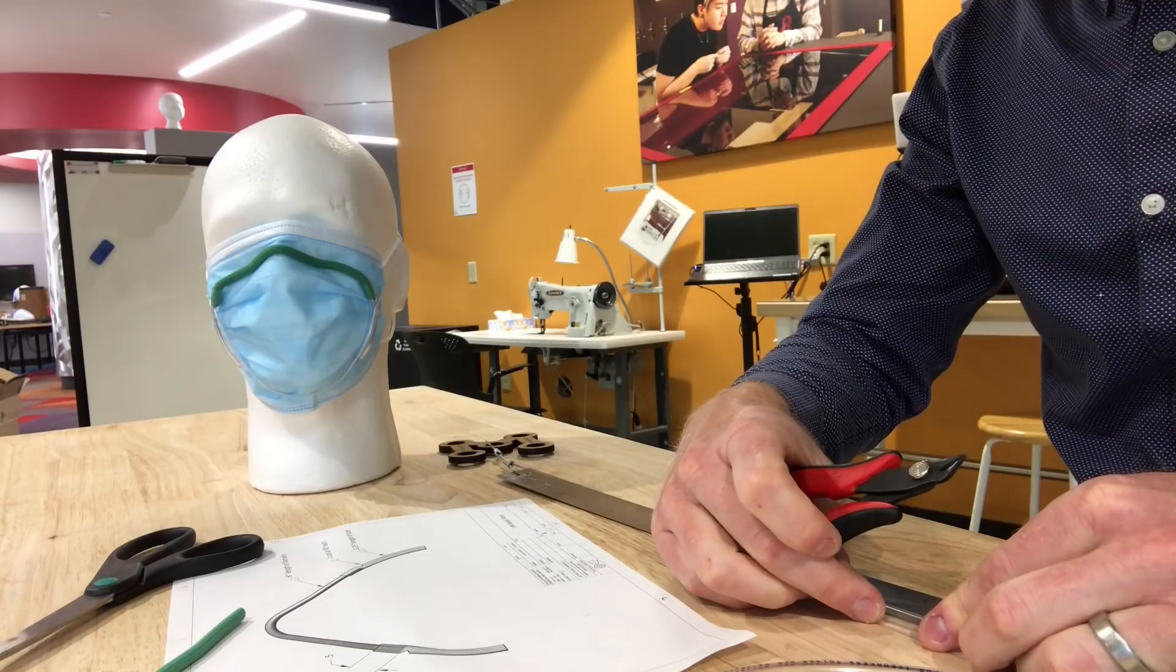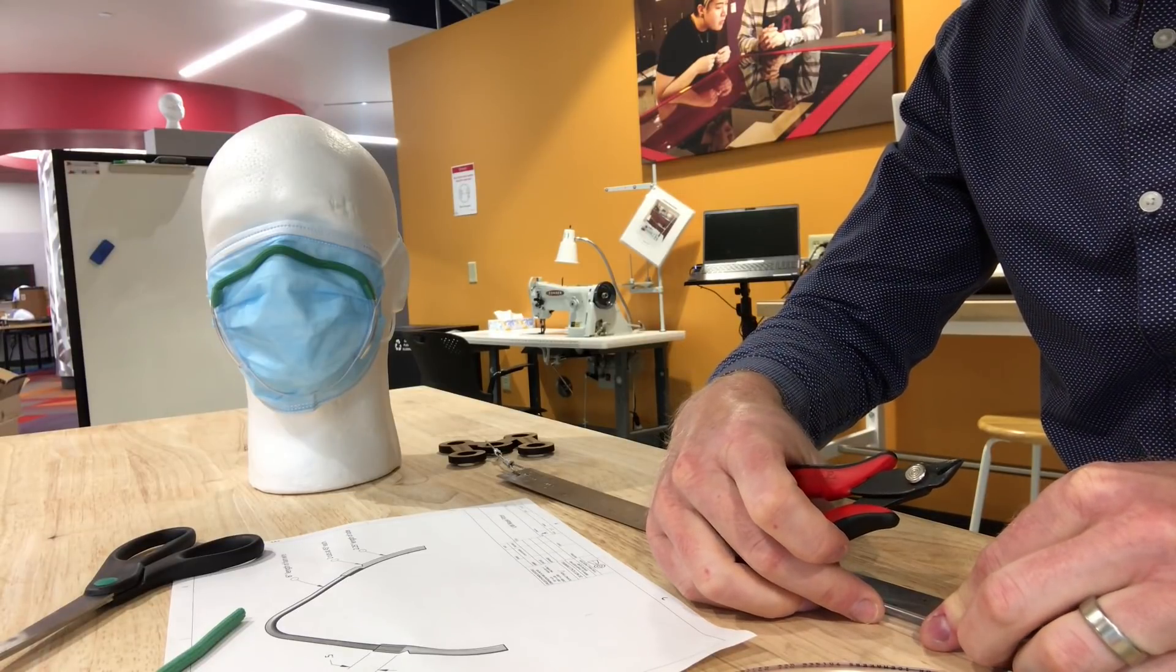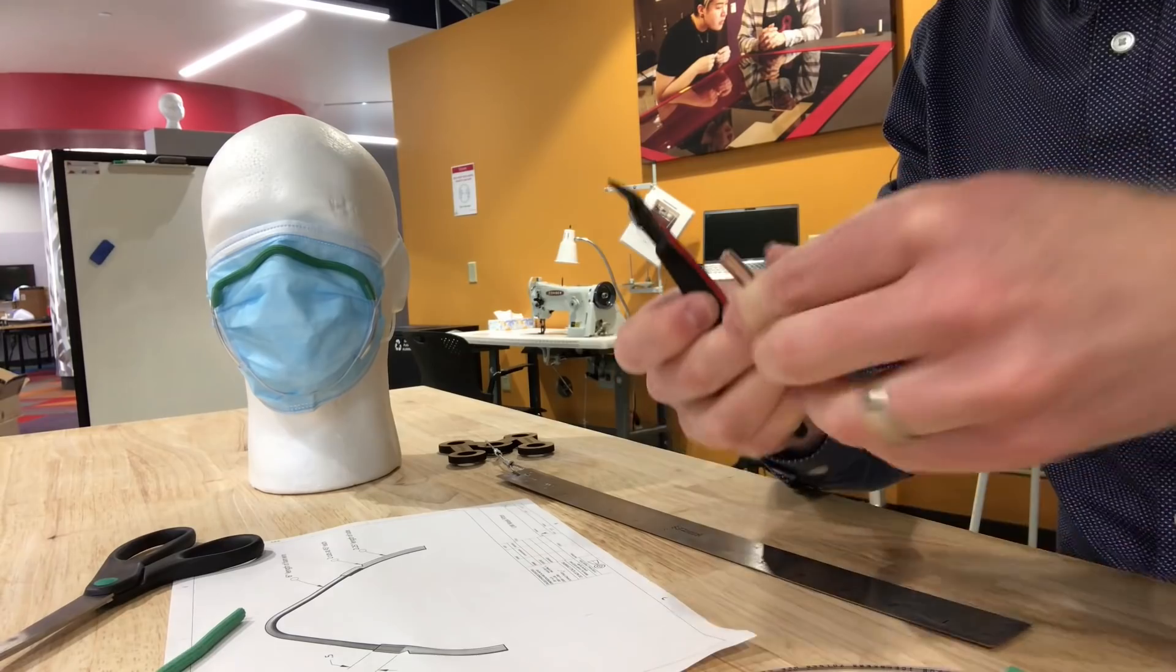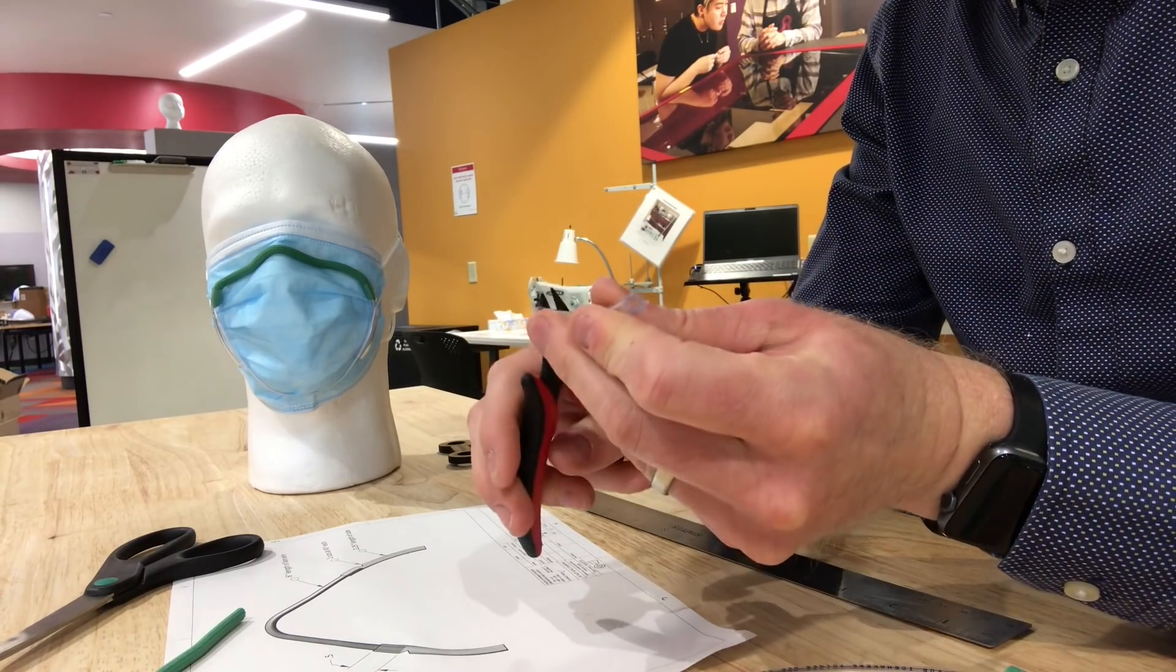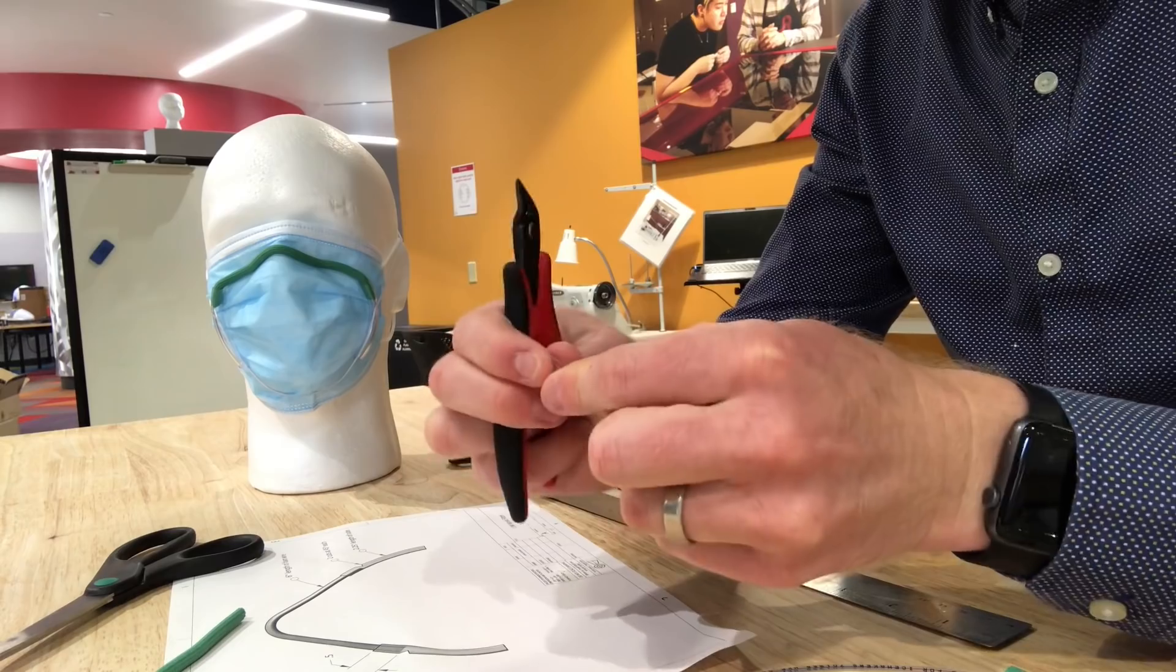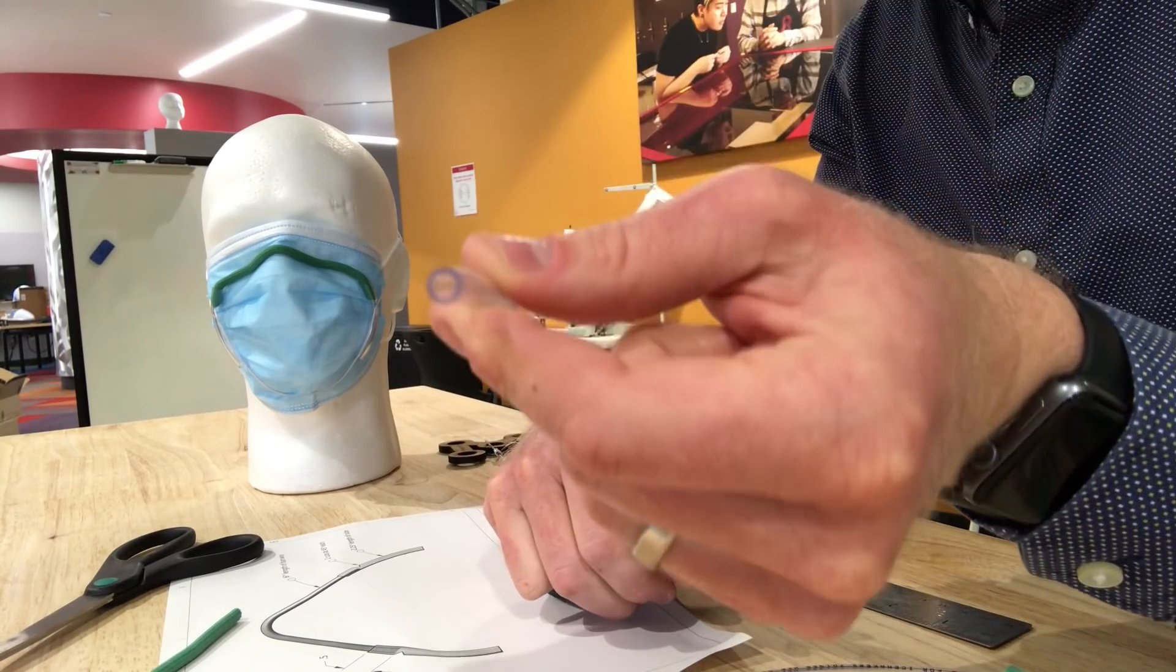I'm going to double check that that's the right length, two and a quarter looks good. You want to make sure that it's a nice clean cut, that there are right angles and they don't have big angles on the end.